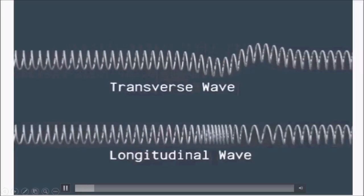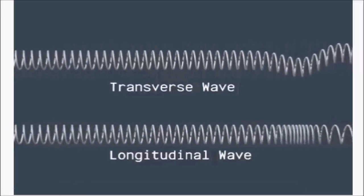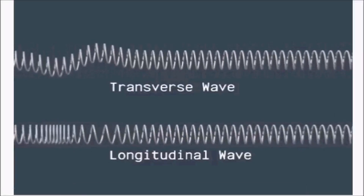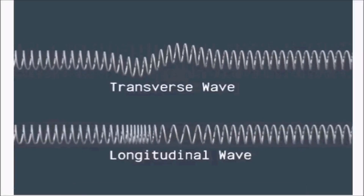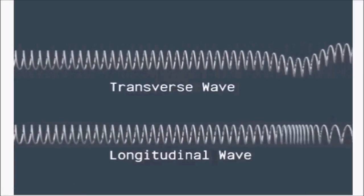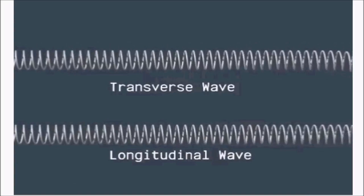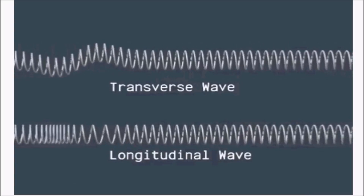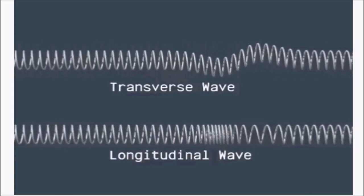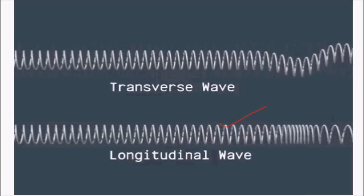In a transverse wave, the particles vibrate perpendicular to the direction of wave motion, whereas in longitudinal waves the vibration of particles is parallel to the direction of wave propagation.